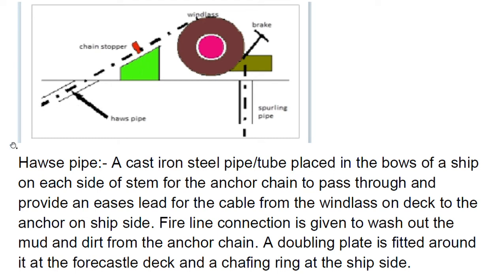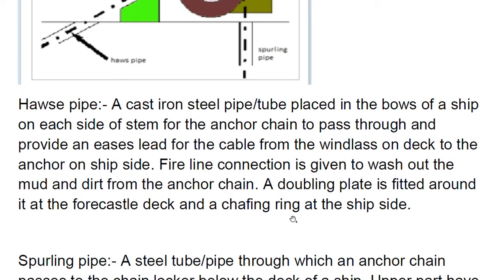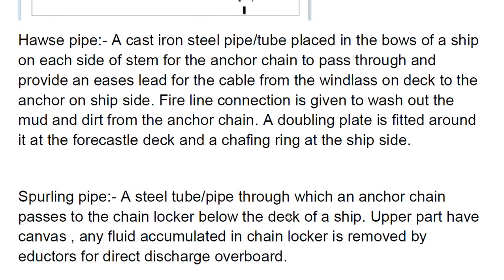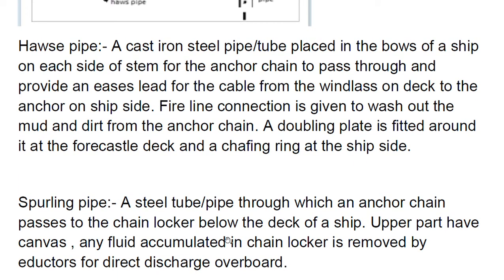When we talk about the spurling pipe, it is a steel tube or pipe through which the anchor chain passes to the chain locker below the deck of the ship. The upper part of the chain locker may have a canvas cover. Any fluid accumulated in the chain locker is removed by an eductor for direct discharge overboard.